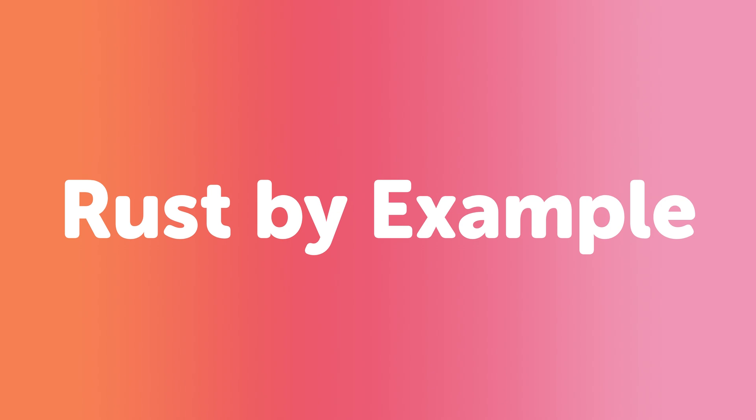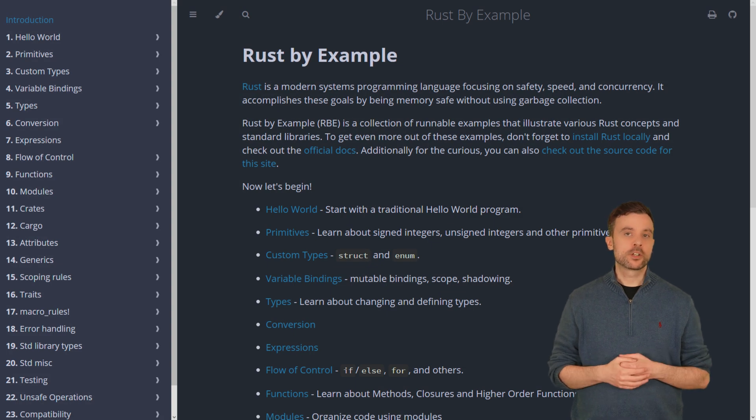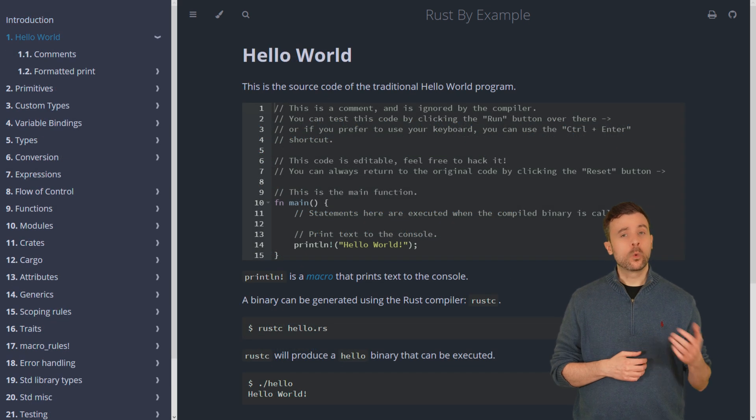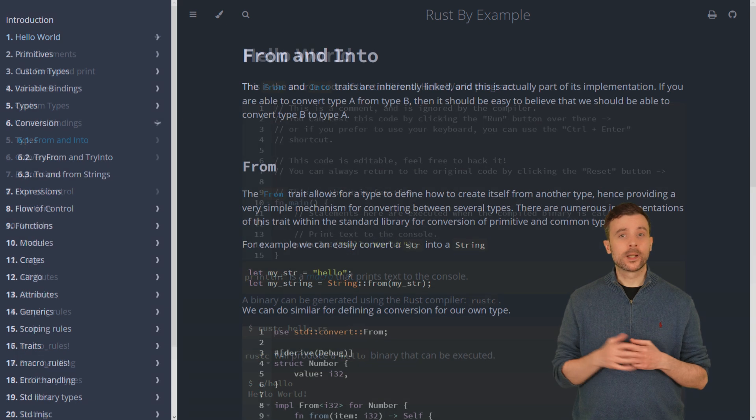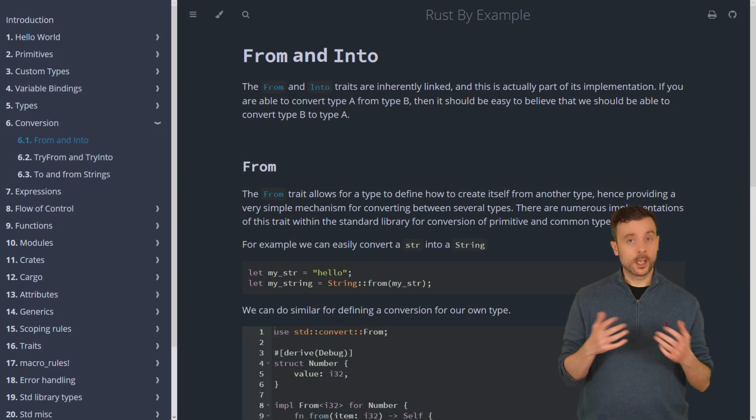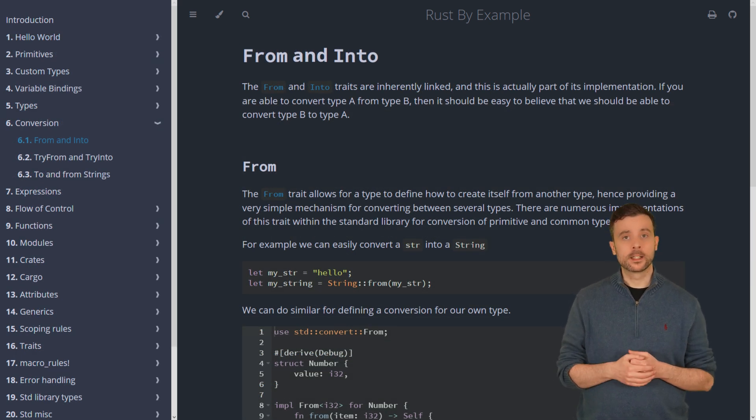Rust by Example does exactly what it says on the tin. It focuses on the implementation of the Rust language. This is great to quickly look things up if you know what you want to know, however, there are some minor pseudo-anti-patterns in here, so if you don't already know that they are anti-patterns, you might accidentally copy them.